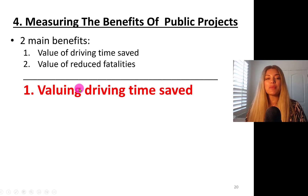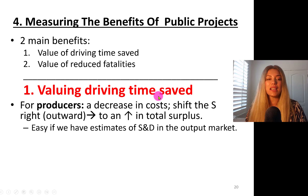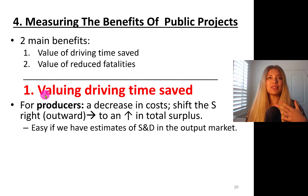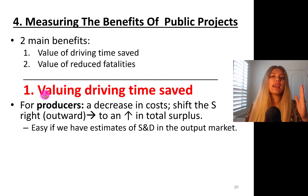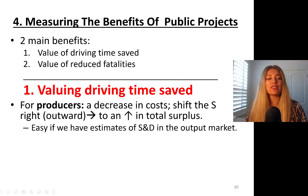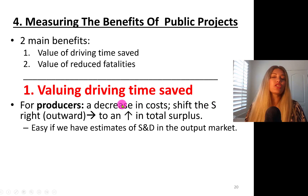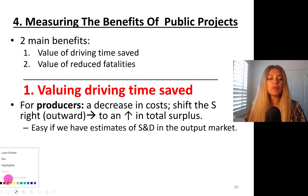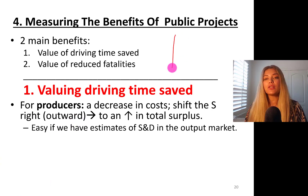We are going to talk about valuing driving time saved. For companies, driving time saved — for instance, let's say I am the Walmart CEO — my drivers can get from point A to point B at a faster rate. There is an economic value of that. For a producer, it's a decrease in cost, so the supply curve will shift to the right, and as a result, the total economic surplus will increase. It's easy if we know the shape of supply and demand curves.